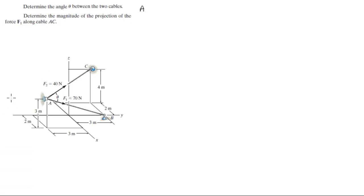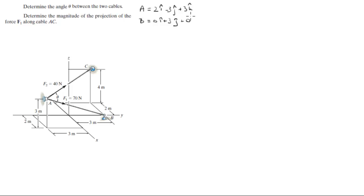The first thing you need to do is find the position vectors of A, B, and C — all the points involved. A is equal to 2i minus 3j plus 3k, B is equal to 0i plus 3j plus 0k, and C is equal to negative 2i plus 3j plus 4k.